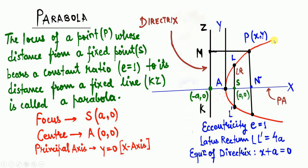Once again: the red curve is the parabola, the black vertical line is the directrix, point S is the focus, point A is the vertex or center, the x-axis is the principal axis, and LL' is the latus rectum. Where the directrix cuts the x-axis it cuts at x = −a, so the equation of the directrix is x = −a, or equivalently x + a = 0.